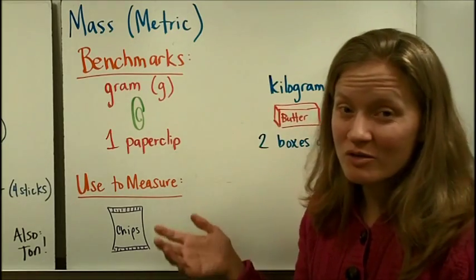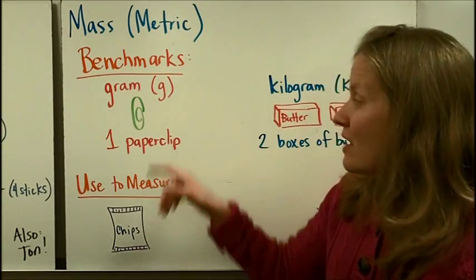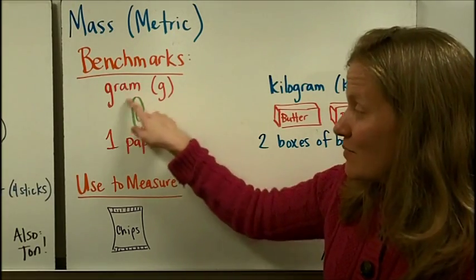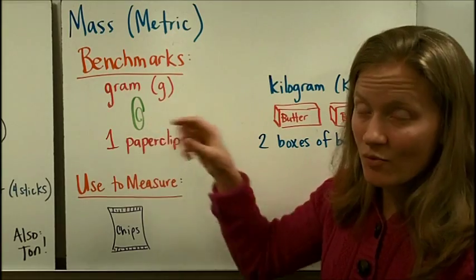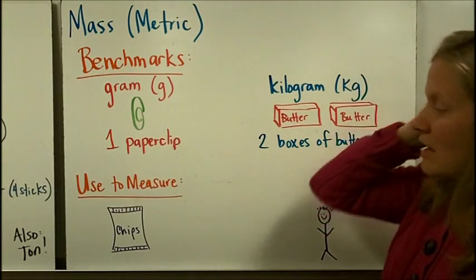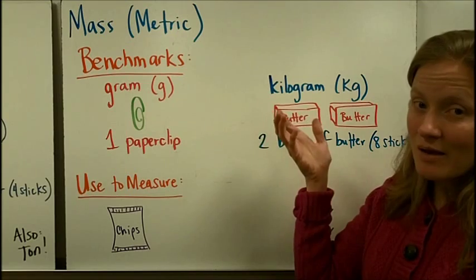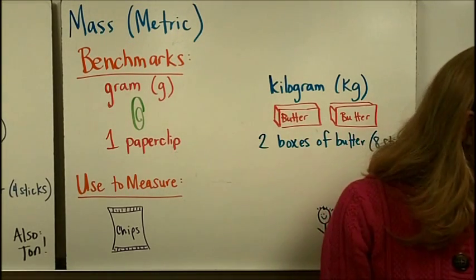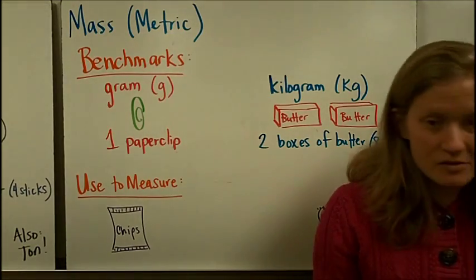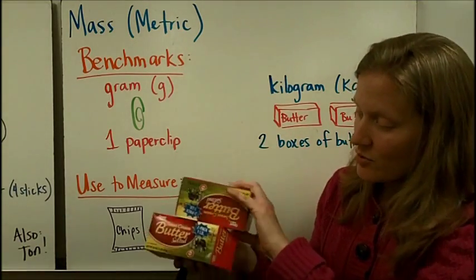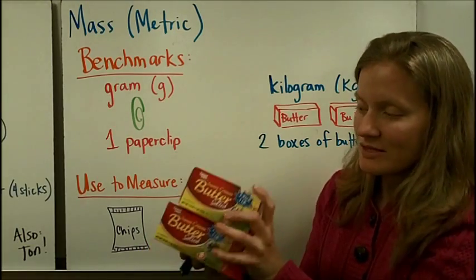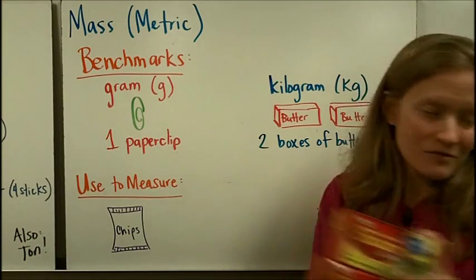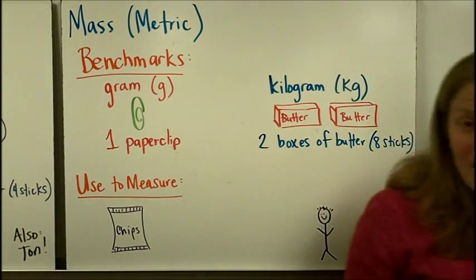Let's talk about the benchmarks for metric units. A gram, abbreviated with a G, is about the mass of one small regular paper clip. A kilogram, which is a big measurement of mass, is about the size of two boxes of butter. If you put these two together, this would be about a kilogram — not exact, but about the size of a kilogram. That would be eight sticks of butter.